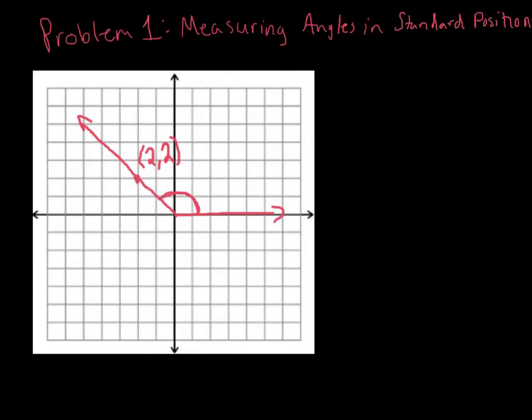You may be able to look at it and say that from the y-axis to this terminal side is going to be 45 degrees, so it's a 135-degree angle — which you would be correct. But if you have a different point that is not (2,2), here's how you'd find it.